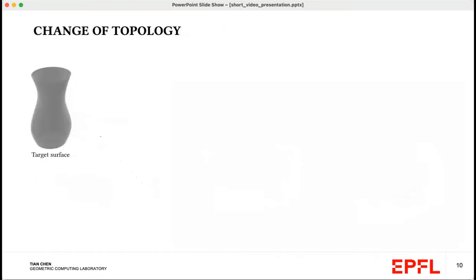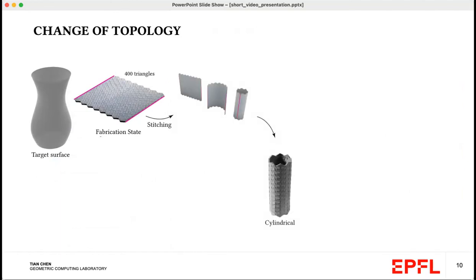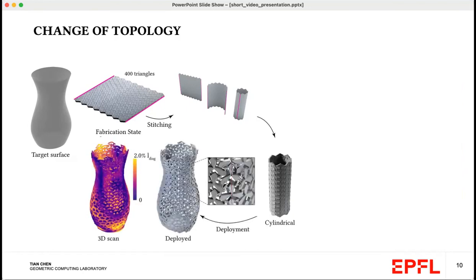We can also change the topology of our target shape. In this case, we use a cylindrical topology. We're able to enforce that in the flat state, the two edge lines can be stitched together.